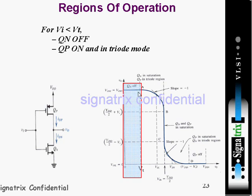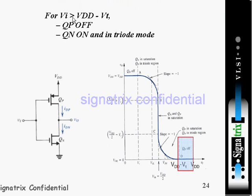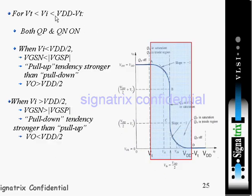When Vi is greater than Vdd minus Vt, Qp is off and Qn is on and in triode mode. Triode mode means linear region — so it is in linear mode here. The output is at minimum in this region.